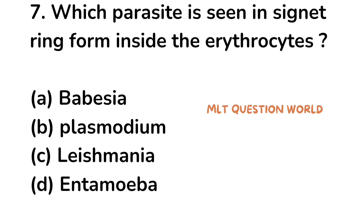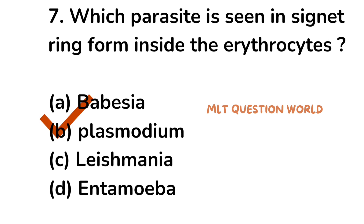Question number 7. Which parasite is seen in cygnet ring form inside the erythrocytes? Option A. Babesia, option B. Plasmodium, option C. Leishmania, option D. Entamoeba. The right answer is option B, Plasmodium — specifically Plasmodium falciparum, which is seen in cygnet ring forms inside RBCs.